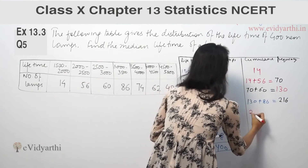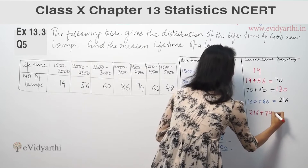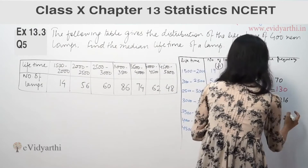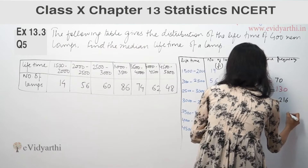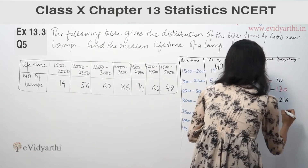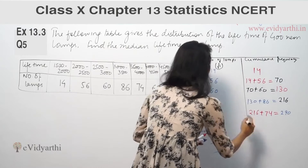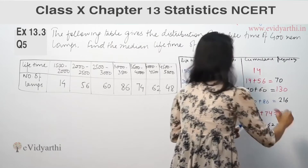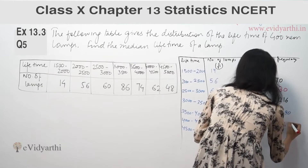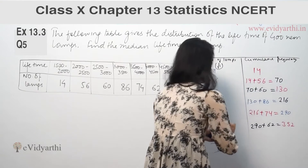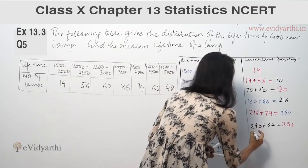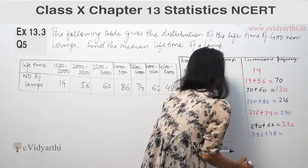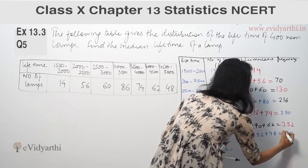Continuing the cumulative frequency: 216 plus 74 gives 290. Then 290 plus 62 gives 352. Then 352 plus 48 gives 400. The last cumulative frequency value matches the total, confirming the table is correct.